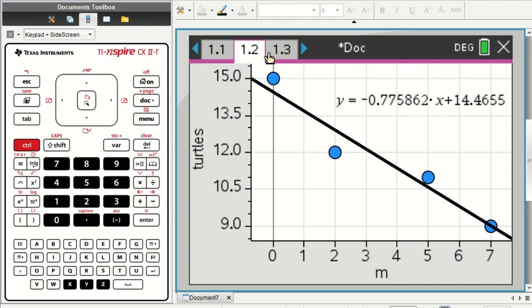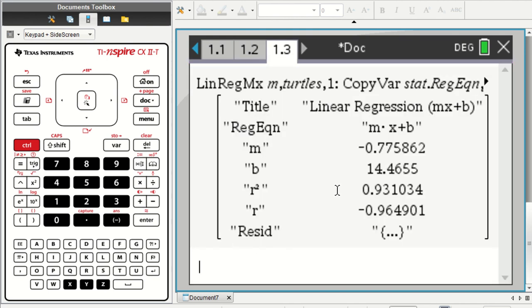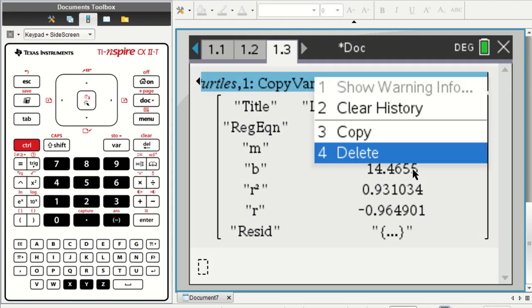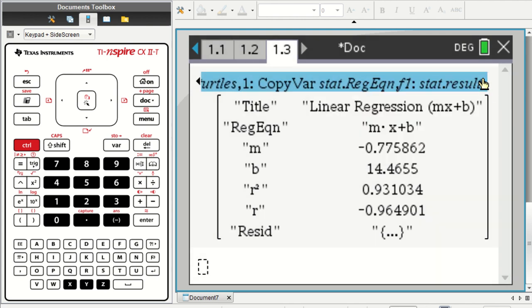So I could go back to the calculation page. The data is stored in function F1. And up here in this list of commands, it's kind of hidden. If I hit the arrow over here, there it is. F1. We can see that that's where the regression equation is stored.